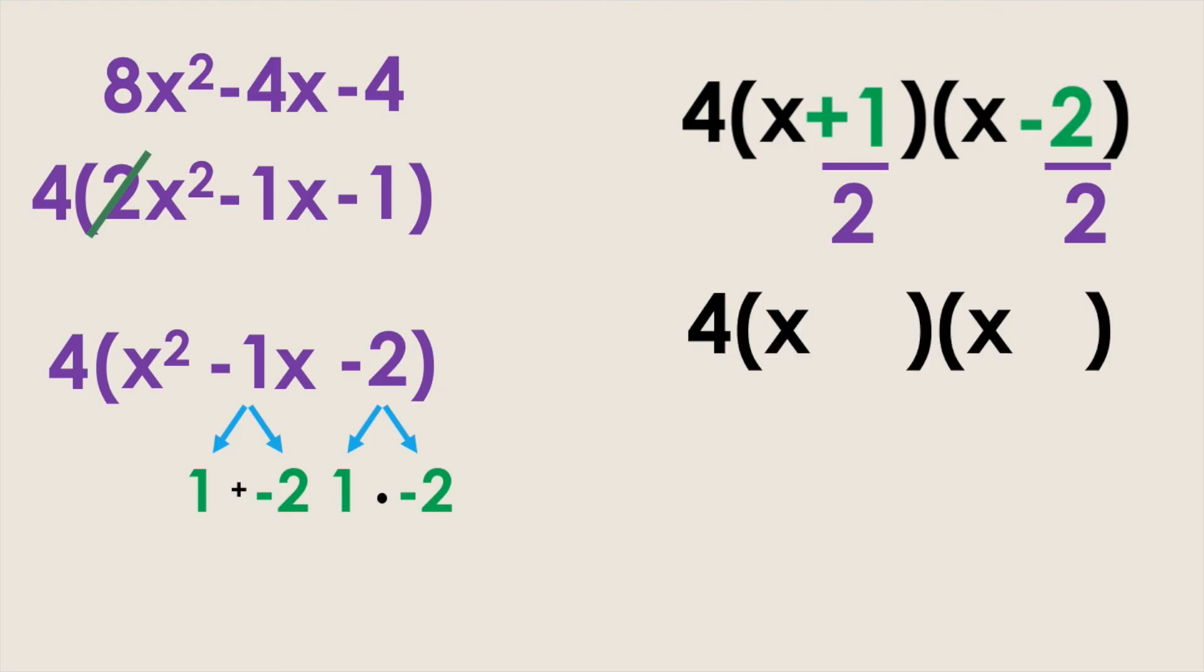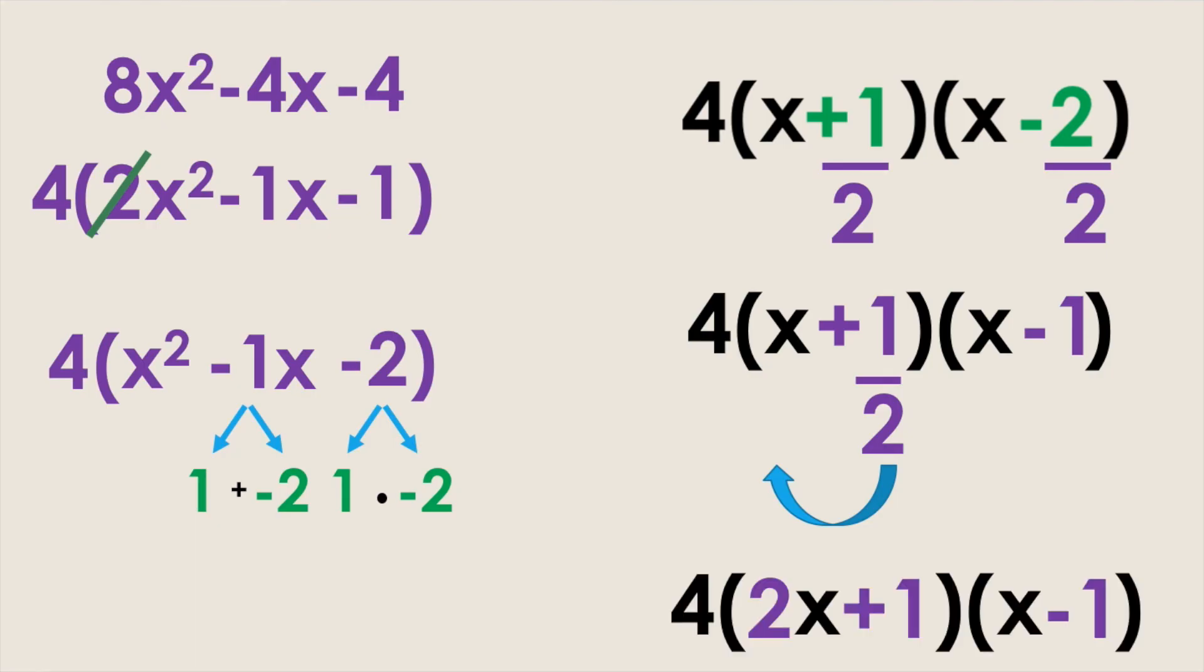Now you want to go ahead and simplify any fractions. 1 over 2 can't be simplified any further and negative 2 over 2 simplifies to negative 1. Because there's a 2 remaining in the denominator underneath the 1 half you're going to bring that 2 in front of the x in that set of the parentheses. So the final factored form is 4 times 2x plus 1 times x minus 1.